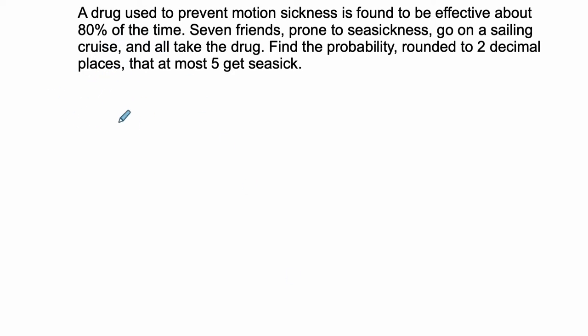Okay, so here we have a type of problem that's going to fall into a category called binomial probability. So we're going to set this up. We're not going to talk too much about the background here of how binomial probability works. We're just going to apply it. A drug used to prevent motion sickness is found to be effective about 80% of the time. So this is one probability. I'm going to write 0.8 because I'm not sure if this is the probability that we're trying to measure, P, or its complement, Q.